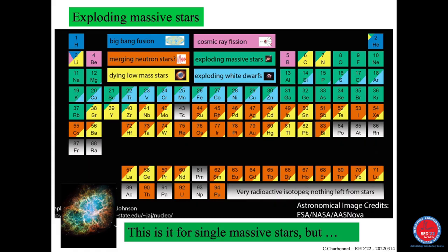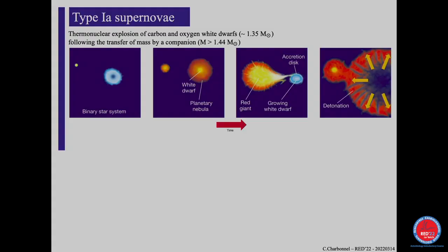This would be the end of the story for the Sun, but what can happen else if you are not a single star? If you are with a companion — and most stars are actually formed in clusters and in binaries — then what can happen is the following: one of the stars is going to be more massive than the other one. The more massive, the faster the star evolves.